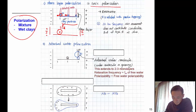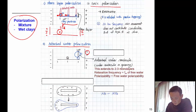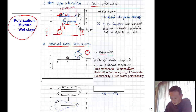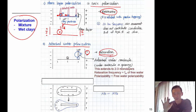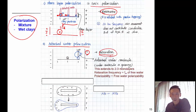The second mechanism is absorbed water polarization. When you have absorbed water on the clay surface, it can rotate in response to the electric field — this is a relaxation mechanism. The ionic (Stern layer) polarization shows resonance, but the absorbed water shows relaxation because the water will rotate and then become randomly oriented.